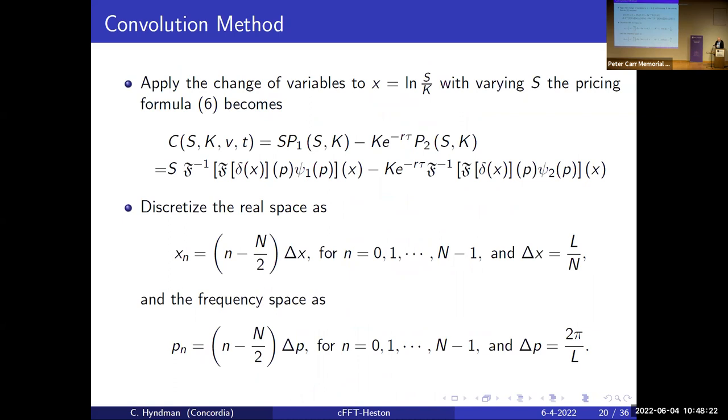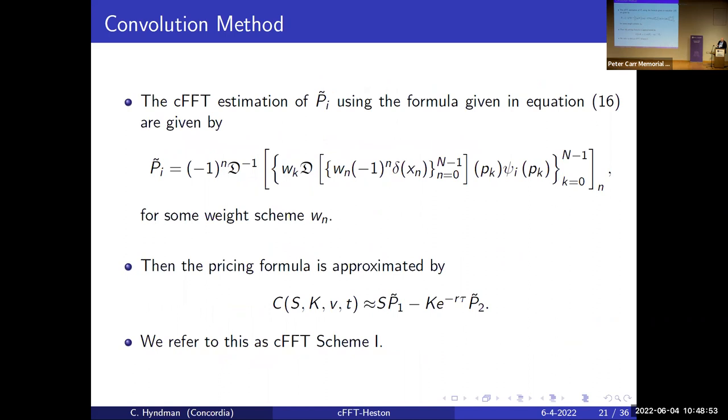We have to discretize it eventually, but we can write a formula for the call option price, which looks a bit nasty, but it's all right. These are just the probabilities. And then we discretize the spatial variable and the frequency space in a way satisfying the Nyquist constraint so that we don't have aliasing. And then we can write things in terms of discrete Fourier transform in order to, you know, approximate so there's some truncation involved. But we can then use the FFT to calculate this discrete Fourier transform very quickly. So this is giving us the pricing formula, and we call this Scheme 1.